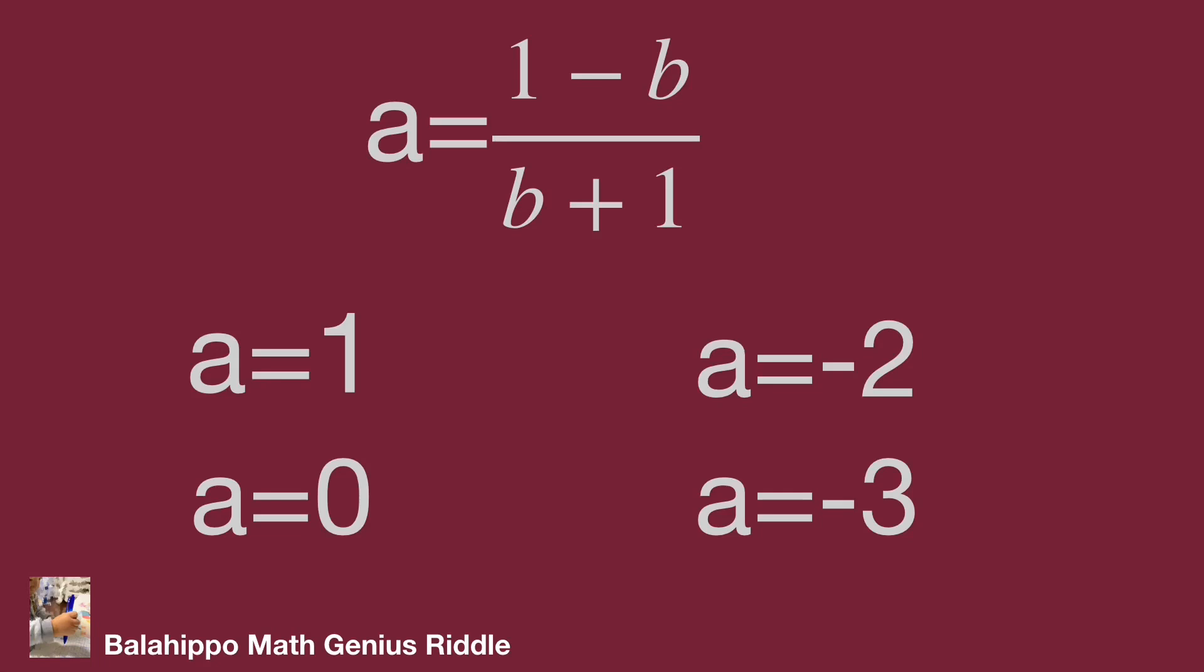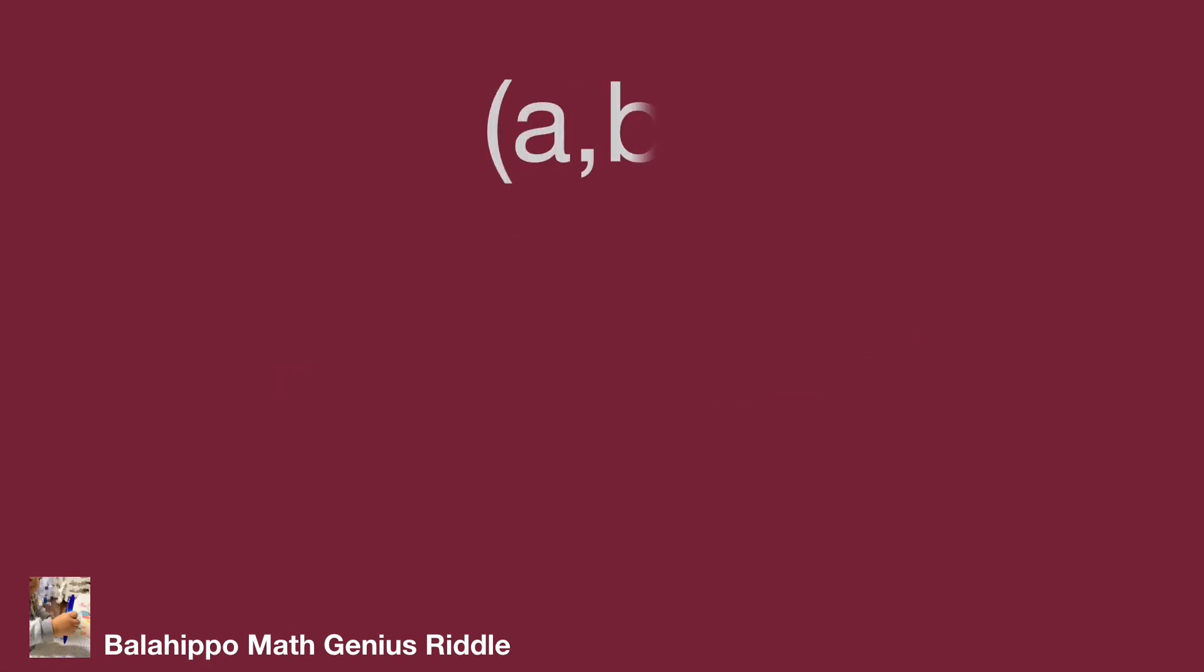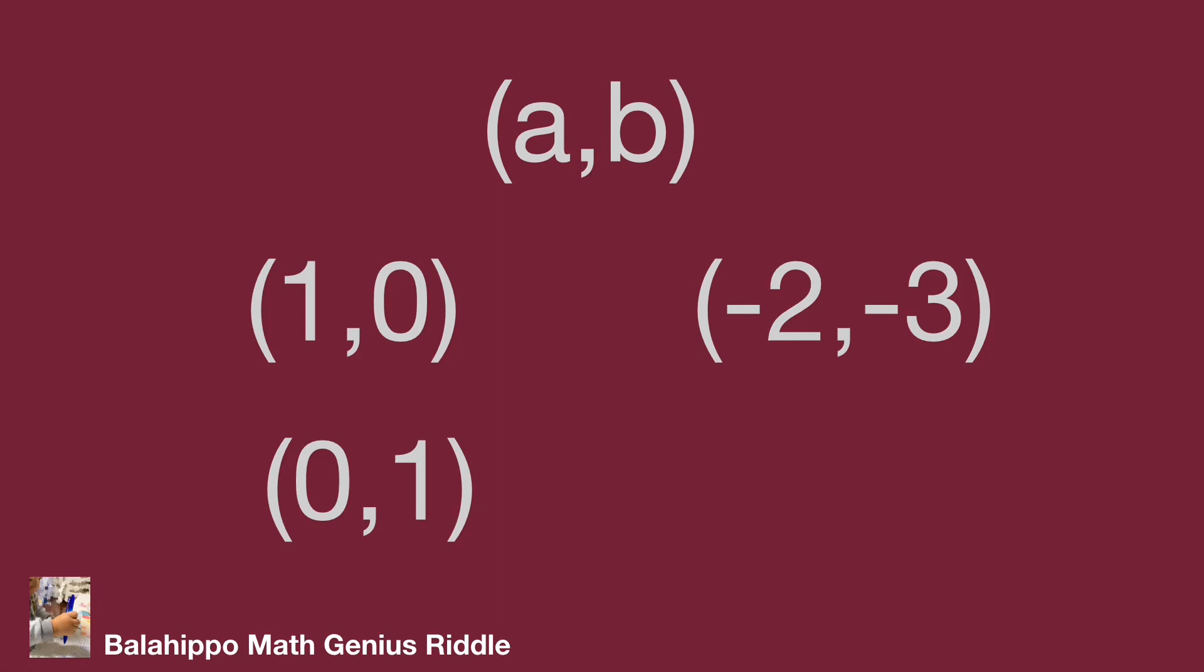So our answer for the number pairs (a, b): they are (1, 0), (0, 1), and (-2, -3), (-3, -2). Do you find the same result? Hope you enjoy the video. Thank you.